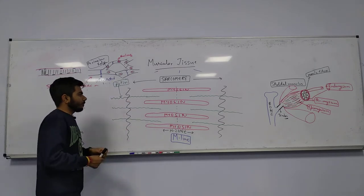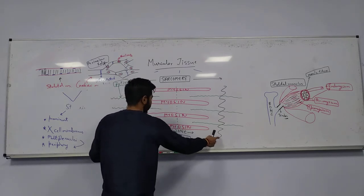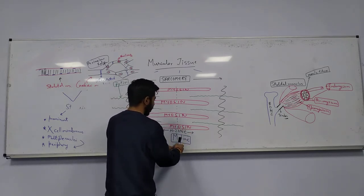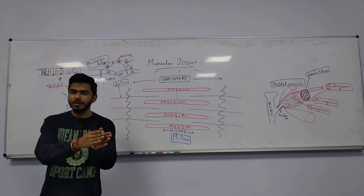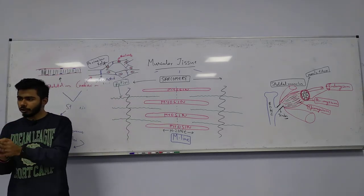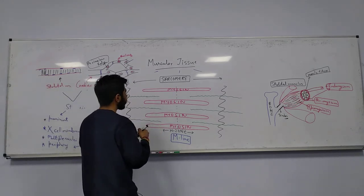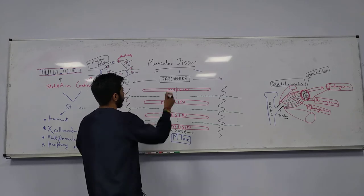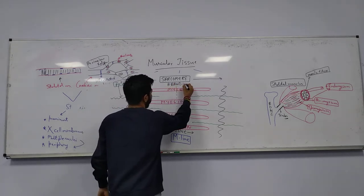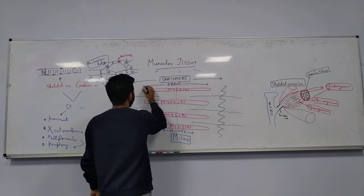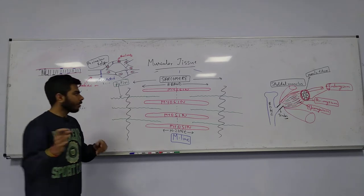These are the Z lines over here. This is the H zone, and this is the M line. We have the anisotropic band, which is the darker band — that is the A band — and this is the A band where the myosin is present.